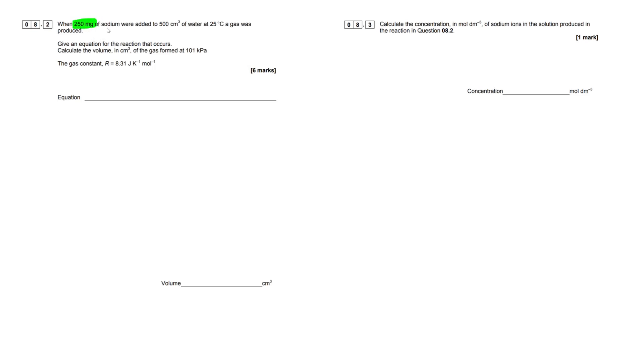So when 250 milligrams of sodium were added to 500 centimeters cubed of water at 25 degrees Celsius, a gas was produced. Give an equation for the reaction that occurs, so that'll be our first point here.